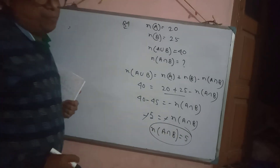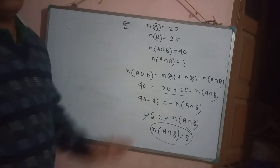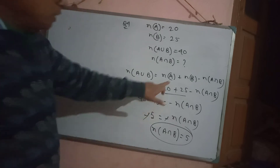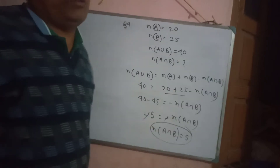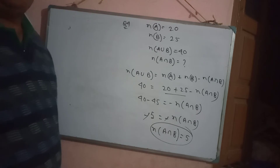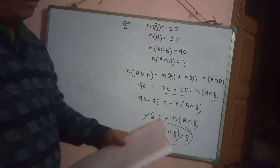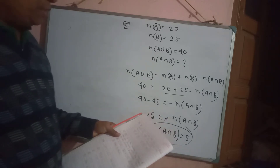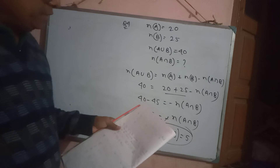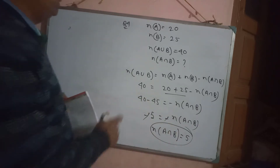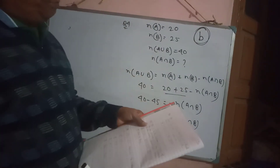N(A ∩ B) means the common element count of sets A and B. N(A ∪ B) means either A or B or both. Just put the values in the formula. Some students have done 50 or 10 — those are wrong answers. Question number 4, option B is correct. N(A ∩ B) = 5.